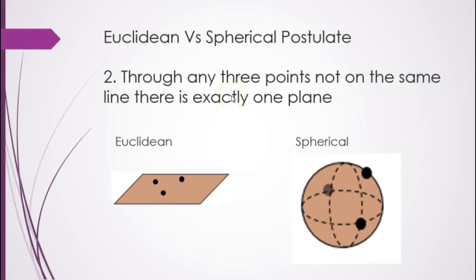Through any three points, there is exactly one plane. Here, one plane, three points here, makes one plane, one sphere.